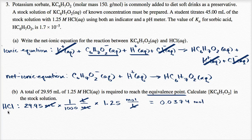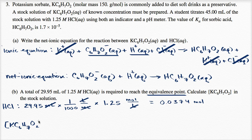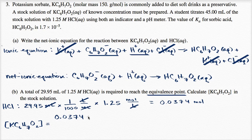This is moles of hydrochloric acid. When they say a total of 29.95 milliliters of 1.25 molar hydrochloric acid is added, they really added 0.0374 moles of hydrochloric acid. So that means our original solution had that many moles of potassium sorbate — 0.0374 moles of potassium sorbate. We can now figure out the original concentration of potassium sorbate.